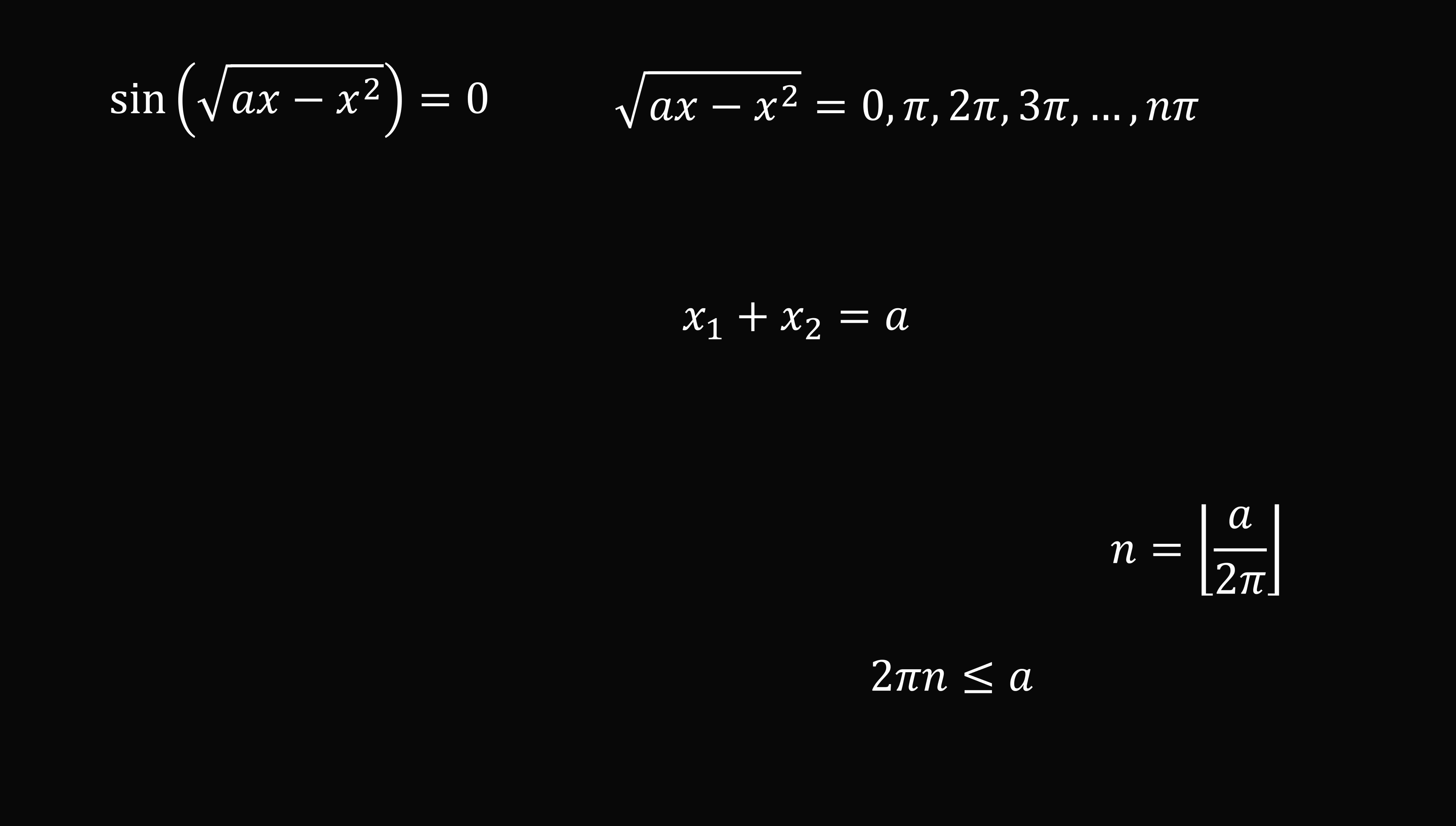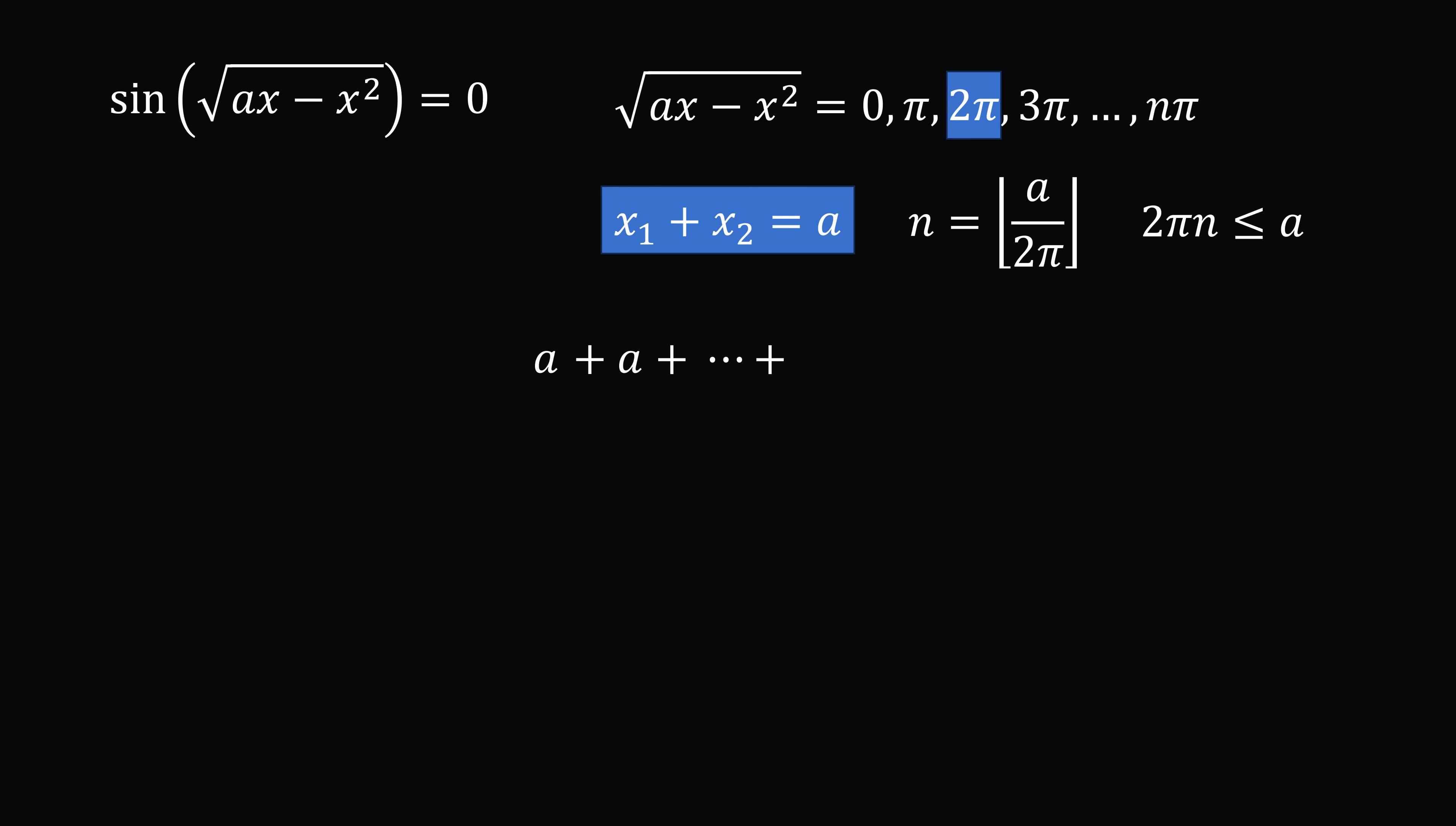So where do we go from here? So let's imagine we set our equation equal to 0. Well in this case, we know the sum of the two roots is equal to a. So we know that a is right here. We can then do the same thing if we set the equation equal to pi. The sum of the two roots will be equal to a, so we add a. We go one more time, the sum of the roots will again be equal to a. In each of these cases, the sum of the roots will be equal to a. The final case will be when we set the equation equal to n pi, the sum of the roots will be equal to a. So now the sum of the roots is a plus a plus a for a total of n plus 1 times, because we have pi n and we need to include 0.